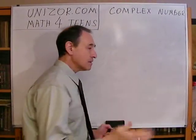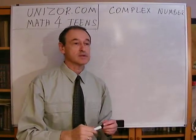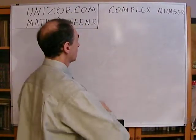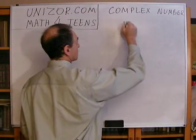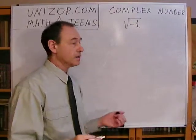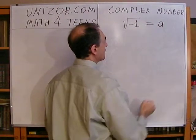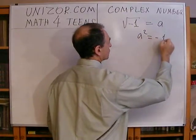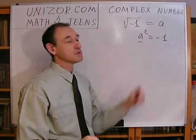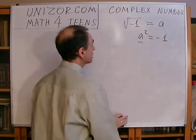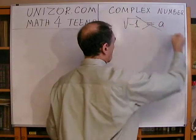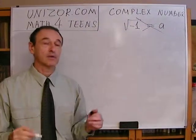Now there are still certain equations within the set of real numbers which cannot be solved. The primary one is that there is no such thing as a square root of a negative number. Why? Because if there is a real number a, then when squared it should equal minus 1. But we know that any real number, positive or negative, if squared, will always give a positive number. So this is not solvable among the real numbers.